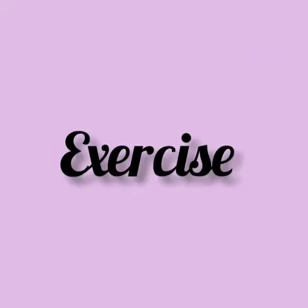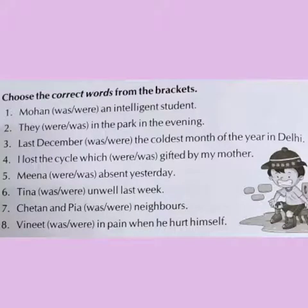Now let's do some exercise. Choose the correct words from the brackets. Students, we have to choose the correct word — was or were — from those given in brackets. We need to see where the singular subject is and where the plural subject is. If singular subject, we use was; if plural, we use were. First sentence: Mohan — was or were — an intelligent student. The subject is Mohan, which is singular. So we will use was. Mohan was an intelligent student.